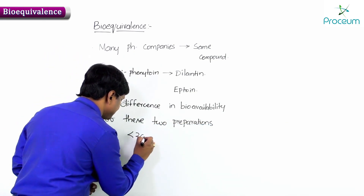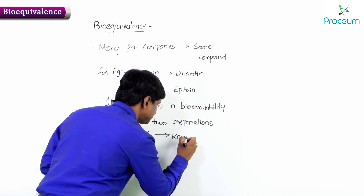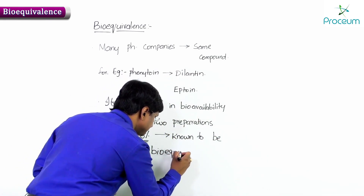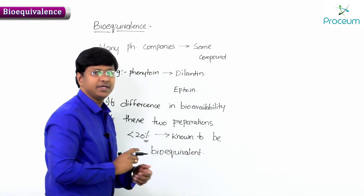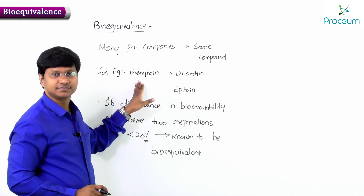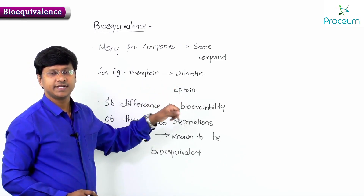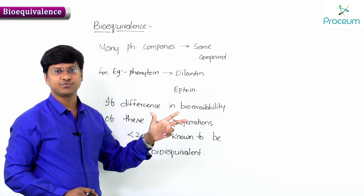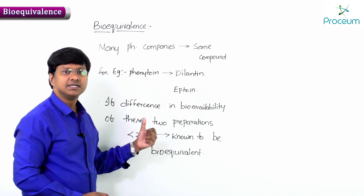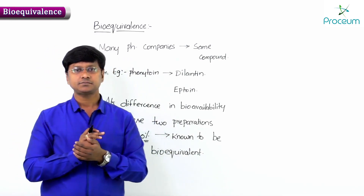If the difference in bioavailability is less than twenty percent, these are known to be bioequivalent. So, for the same drug — for example, phenytoin in dilanthin or phenytoin in eptoin — same drug, same dose, same dosage form, if the difference in bioavailability between the two is less than twenty percent, they are known to be bioequivalent.